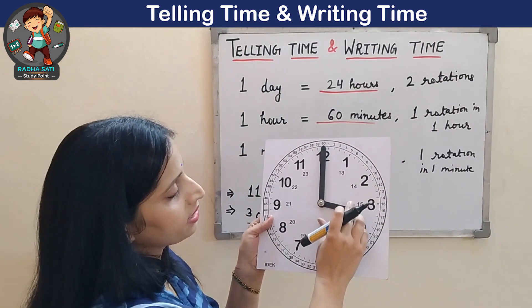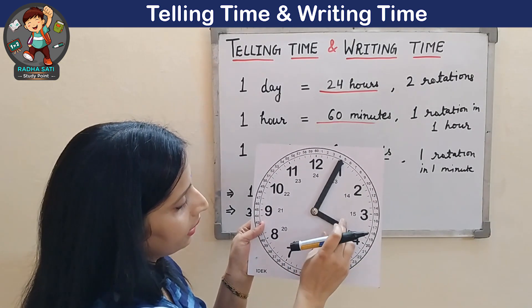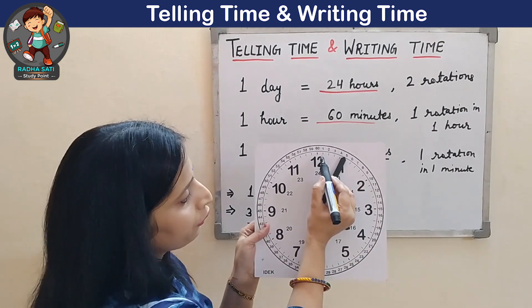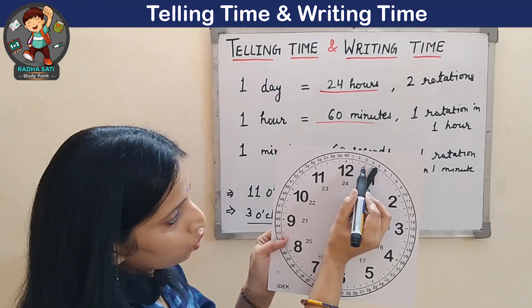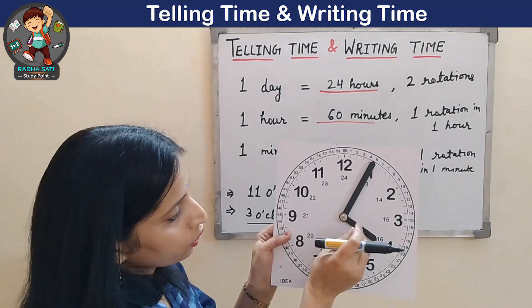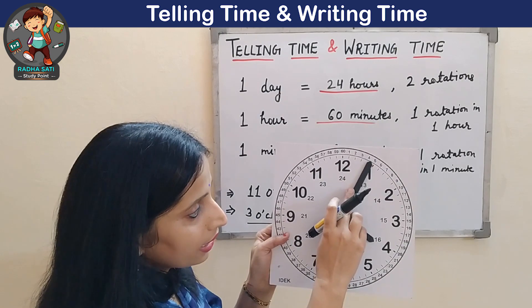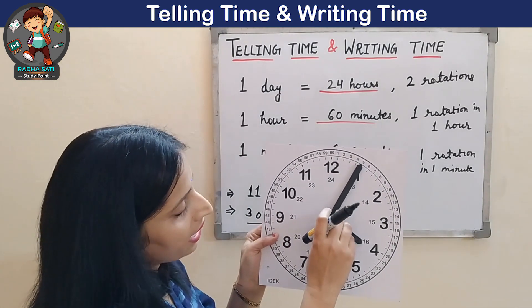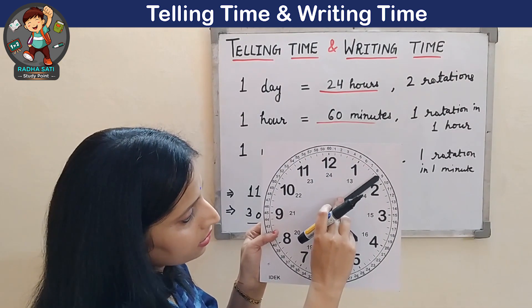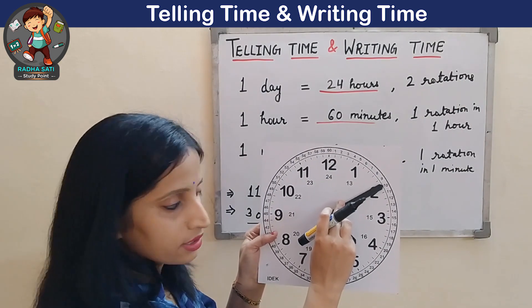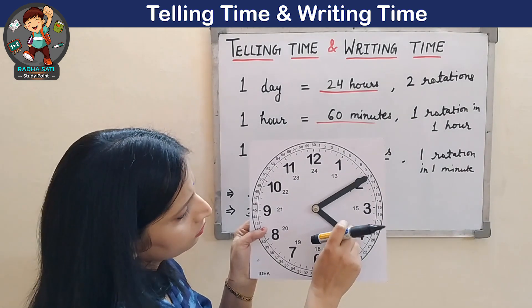Now, for example, the minute hand has moved. You can see there are 5 dots between 2 numbers. So when the minute hand is at 1, it is representing 5 minutes. As it moves ahead: 6, 7, 8, 9, 10 minutes. So this time, the time is 10 minutes past 4.